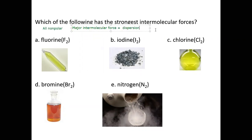Dispersion forces arise from induced dipoles or temporary dipoles that develop due to the polarizability of these molecules. The greater the polarizability, the greater the dispersion forces. The way you get more polarizability is you have more electrons — more electrons means the molecule becomes easier to distort, which gives stronger polarizability and stronger dispersion forces. The most common way to determine which one has the greatest polarizability is by looking at the molar mass.